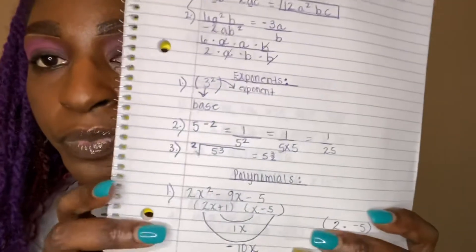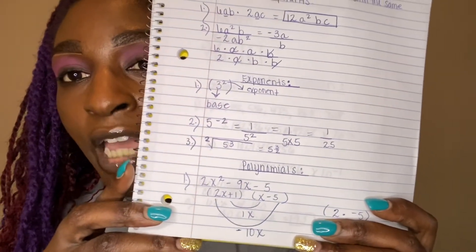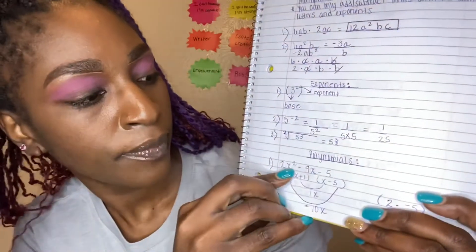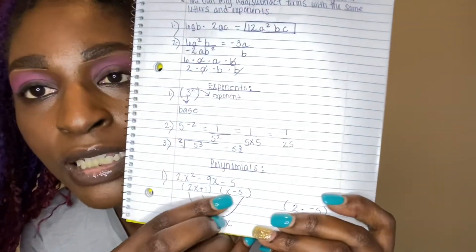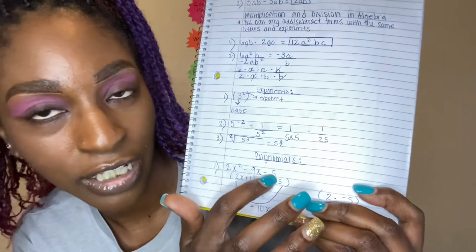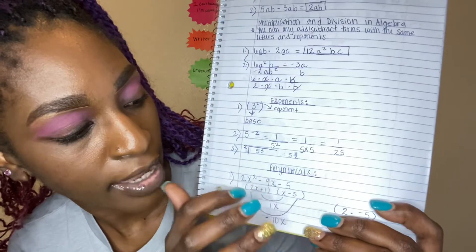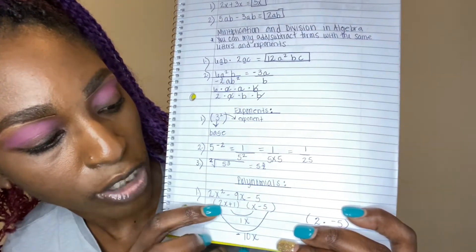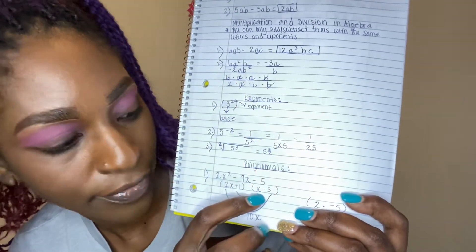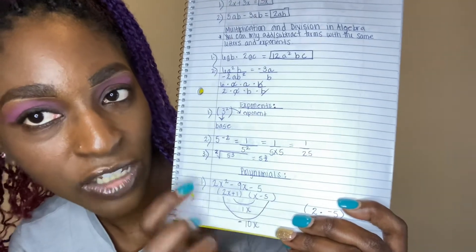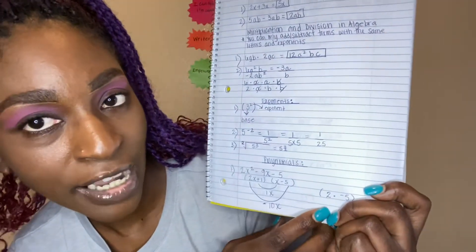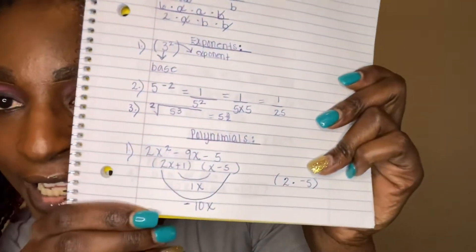We also have polynomials. That is something big that they actually had — when I failed the test, those types of questions were definitely on it. So you have 2x squared minus 9x minus 5. You're going to apply — pretty much take one and drag it to the other. You have (2x + 1) and (x − 5). You drag the 1 to the x, getting 1x. Then 2 times negative 5 — because the signs are different — gives you negative 10x.